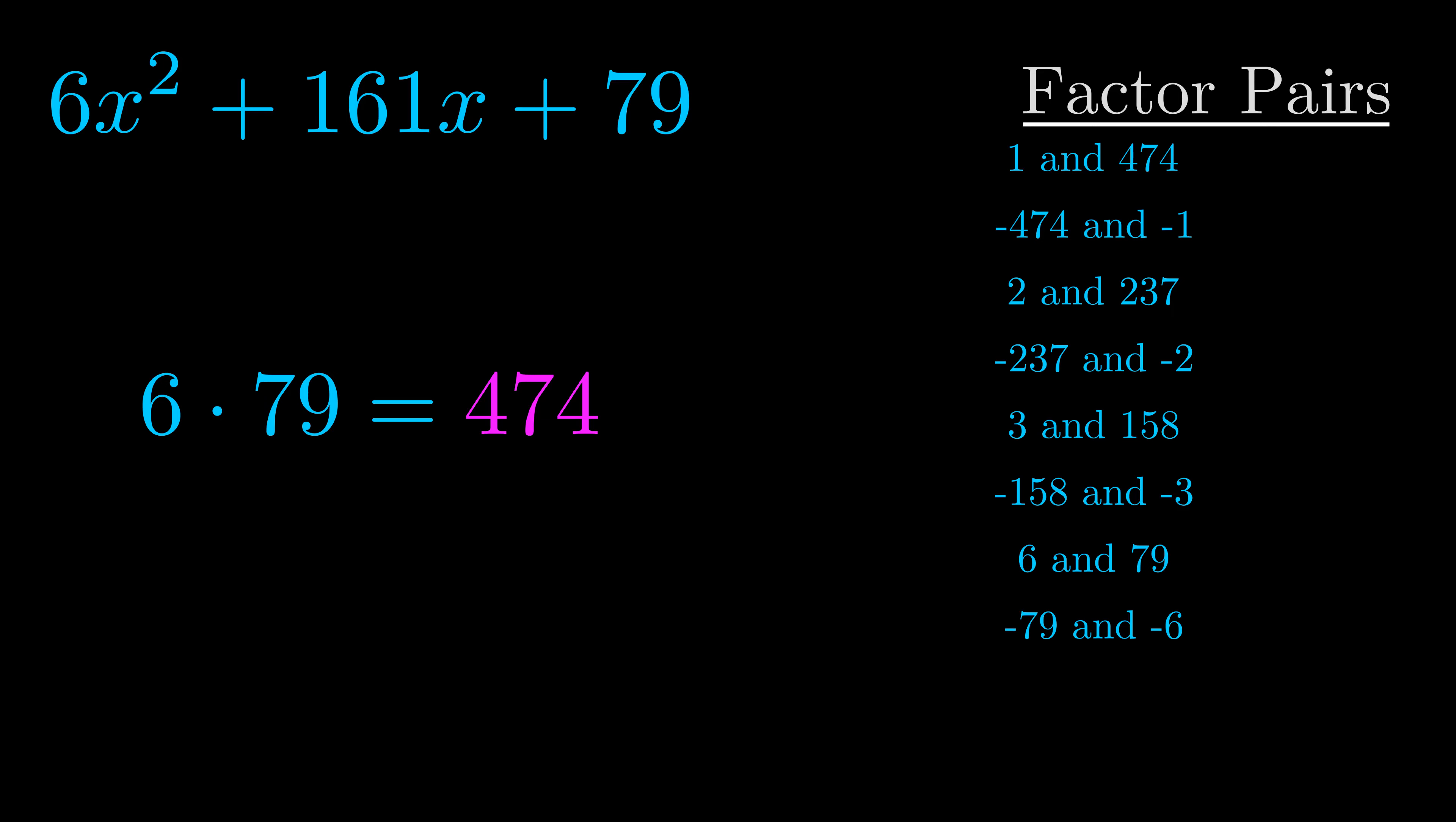The b value is the coefficient on the x term. That's the middle term, the one that we haven't done anything with yet. And really this is the only factor pair that we need.